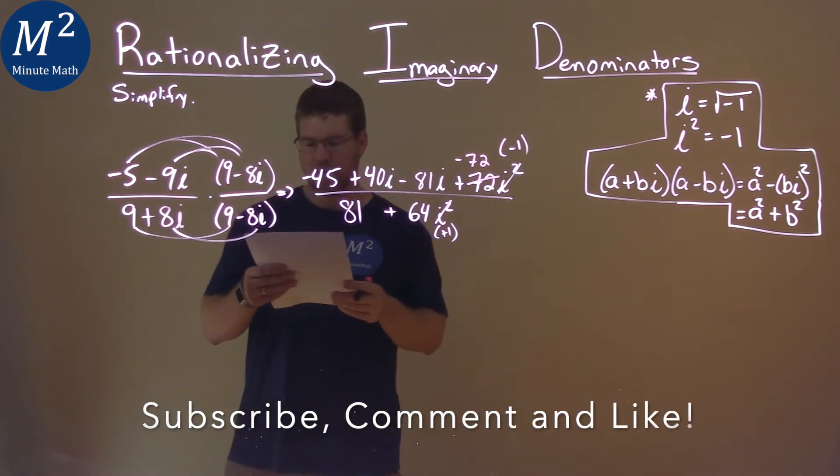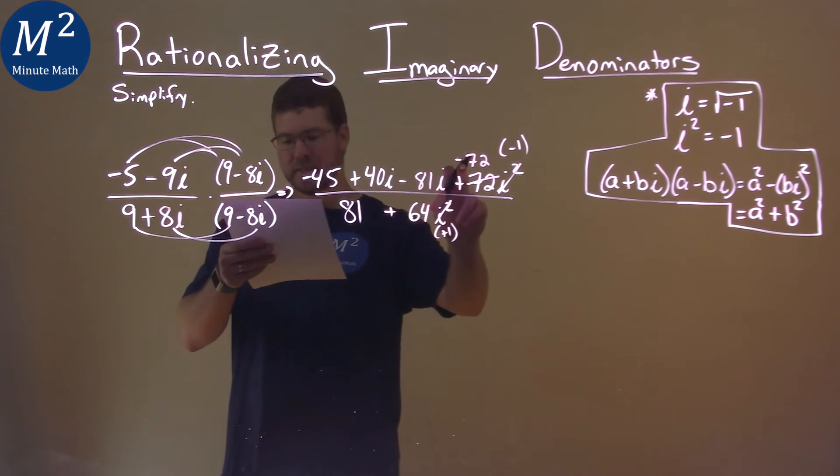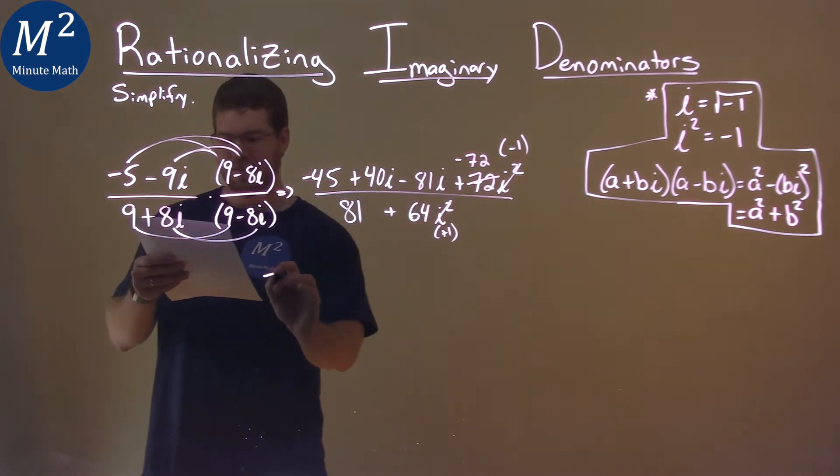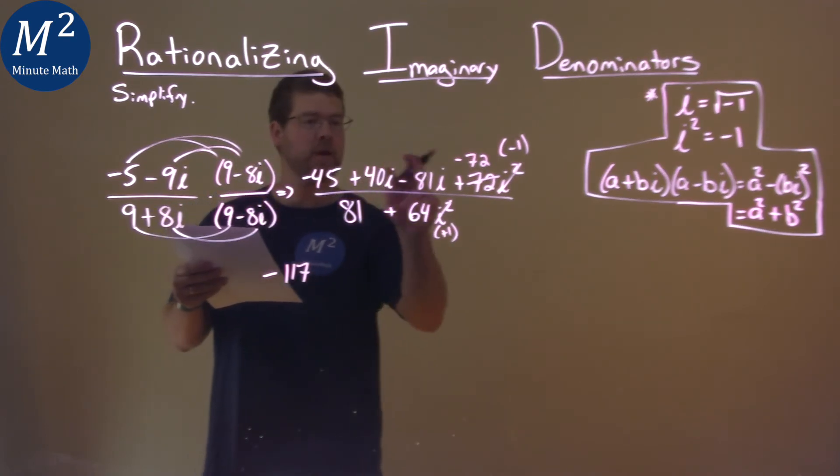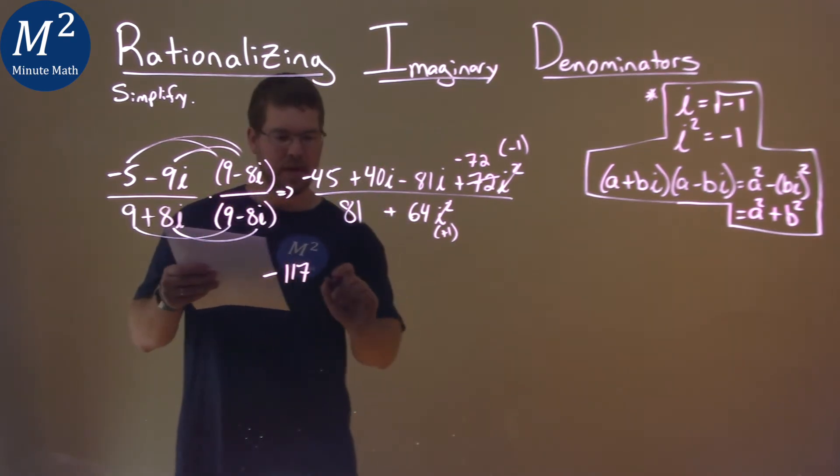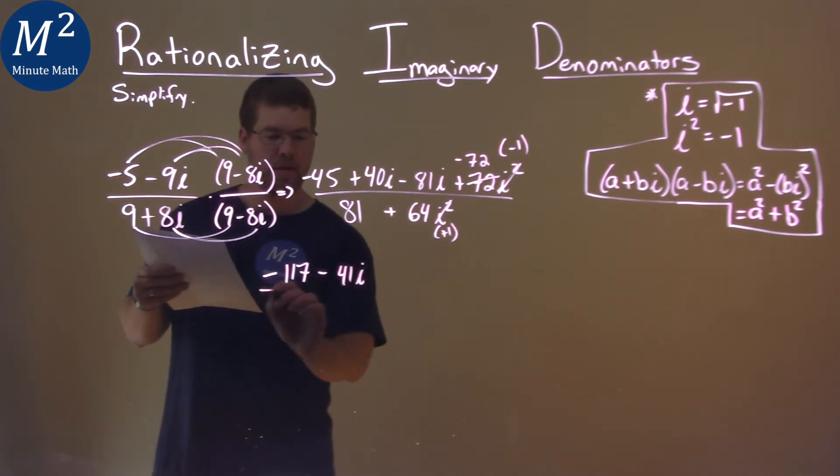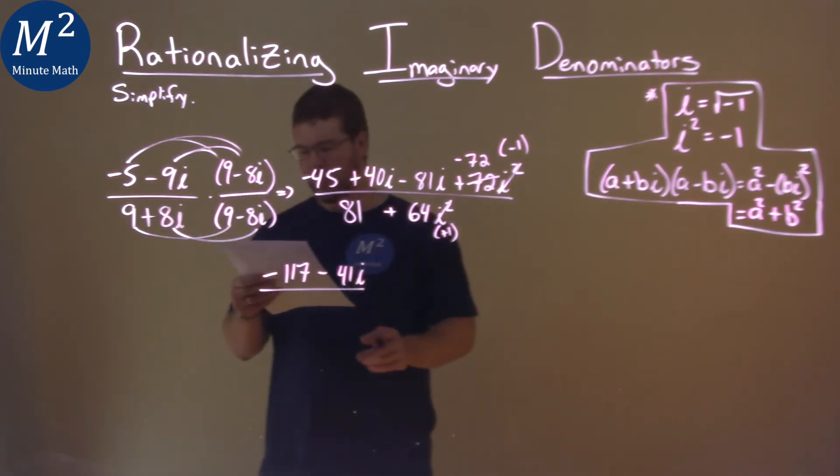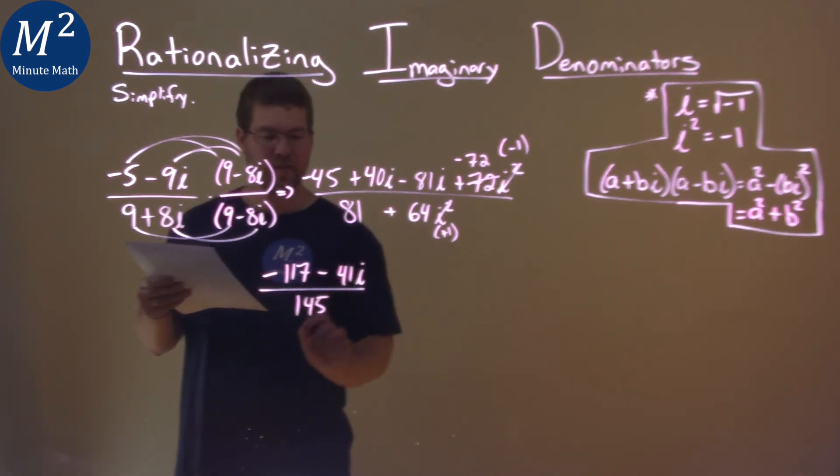So now, let's simplify where we can. Negative 45 minus 72 is negative 117. And then 40i minus 81i is minus 41i. Denominator, 81 plus 64 comes out to be 145, and that's it.